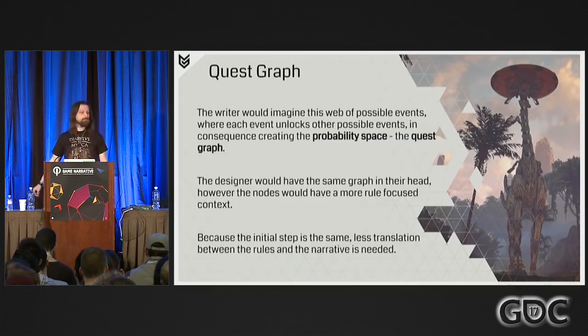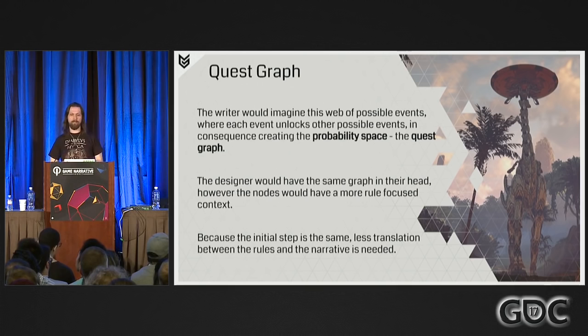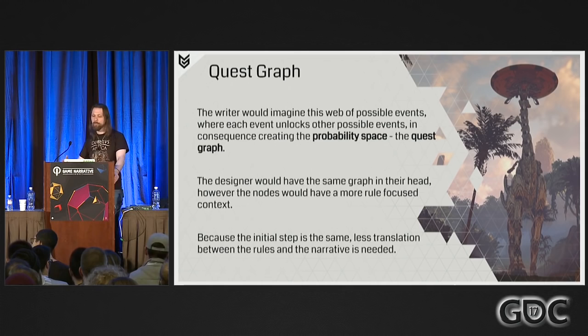The way this works in practice is that the writer imagines a web of possible events where each event unlocks other possible events, creating a probability space — the quest graph. The designer would have the same graph in their head, but with a more rules-focused context for each node. Because the initial step is the same for both writer and designer, there would be less translation needed between rules and narrative.